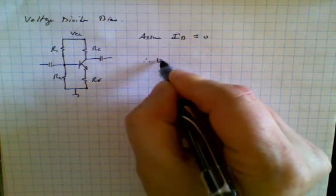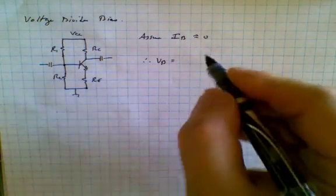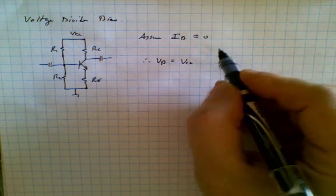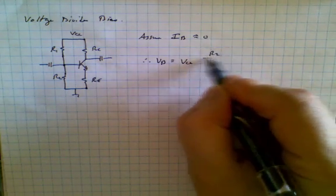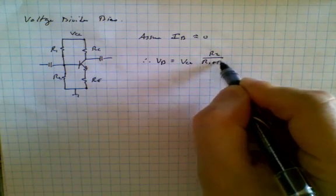So therefore, voltage at the base is simply equal to VCC times R2 over R1 plus R2.